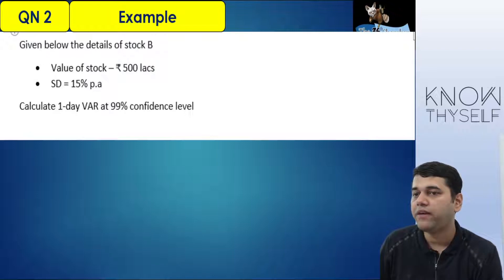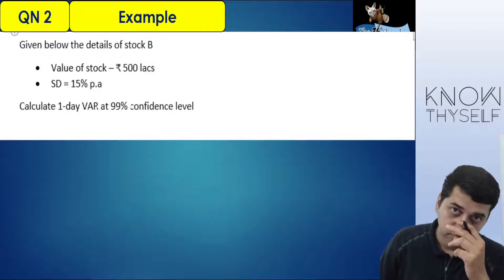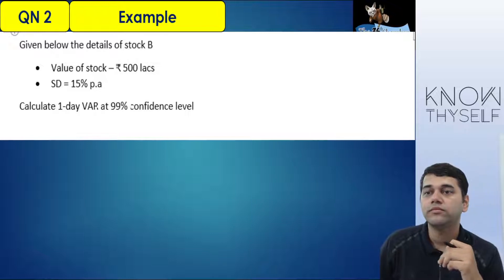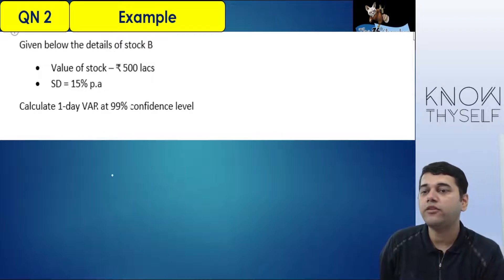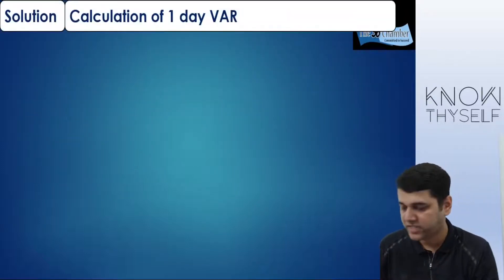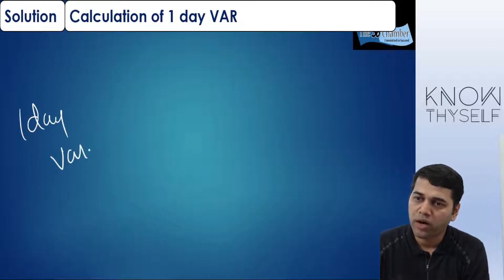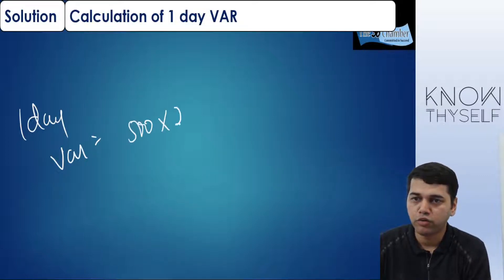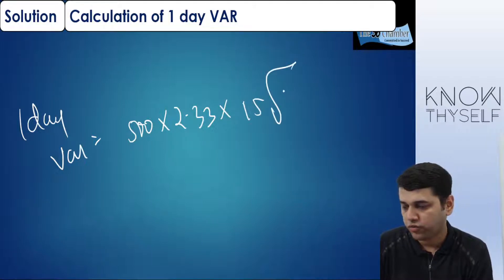Question 2: Given below the details of stock B — value of the stock is 500 lakhs investment, standard deviation is 1%. Calculate 1-day VAR at 99% confidence level. I need Z value — they did not give it, but we know 99% means Z = 2.33. So I can straight away write: 1-day VAR = 500 × 2.33 × 15 × √(1/250).